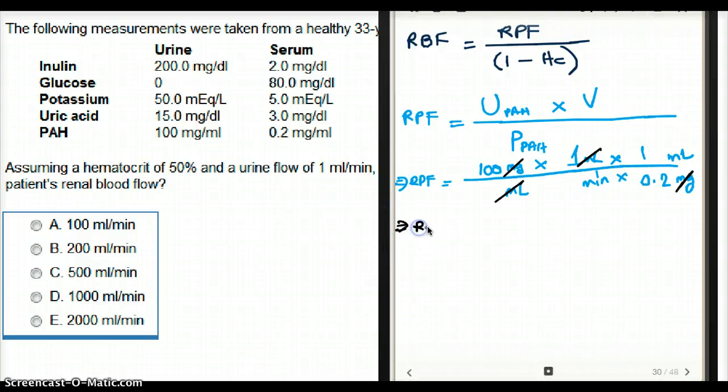So we are left with renal plasma flow is equal to... There is a 10 here, so I'm going to make it 1,000 on top. In the denominator, we have 2. This is going to be milliliter per minute, which is also equal to 500 milliliter per minute.